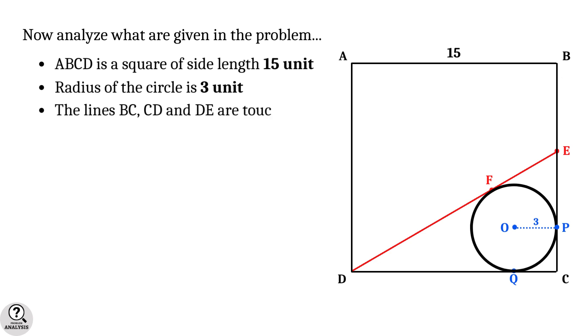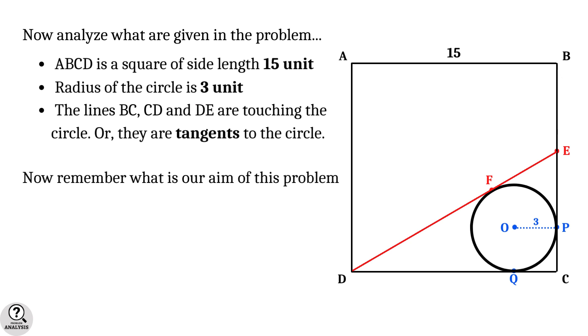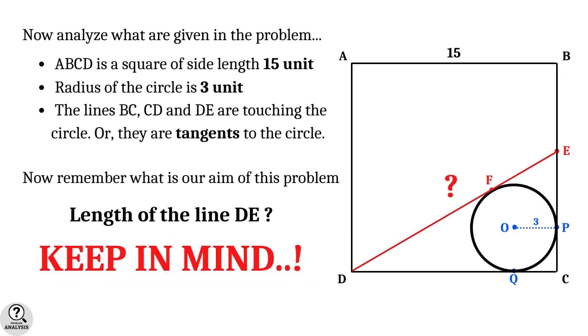And then the lines BC, CD, and DE are touching the circle at the points P, Q, and F respectively. In other words, these lines are tangents of the circle at those points. Now what exactly is our aim of this problem? It is nothing but to find the length of the red line DE.